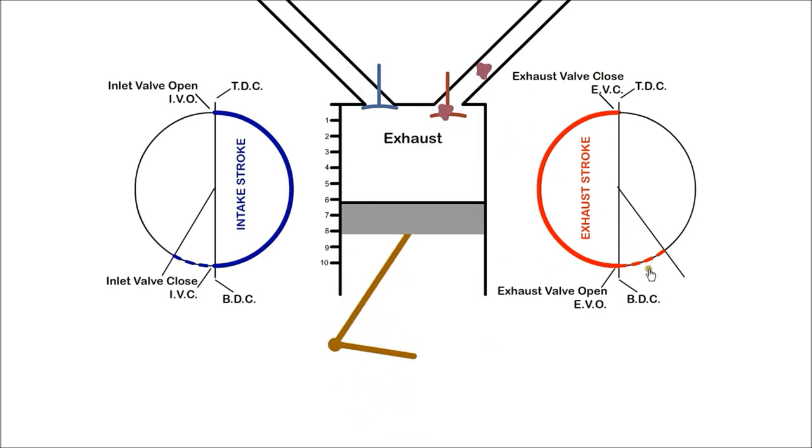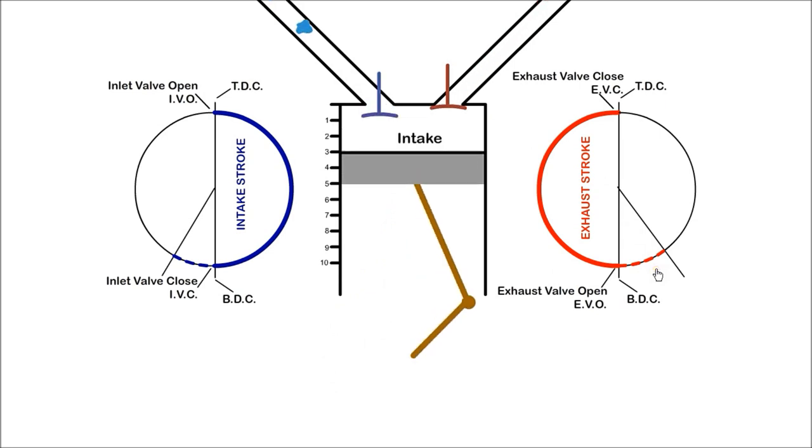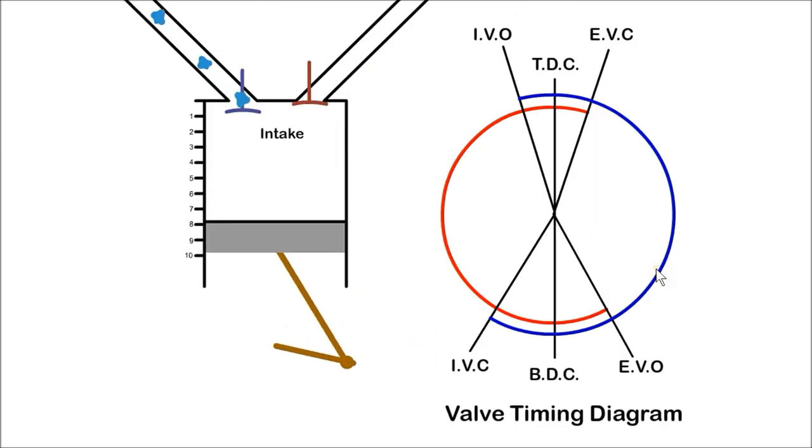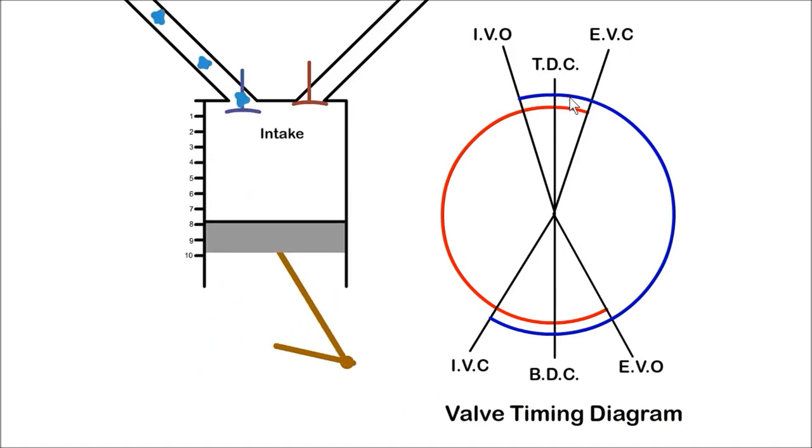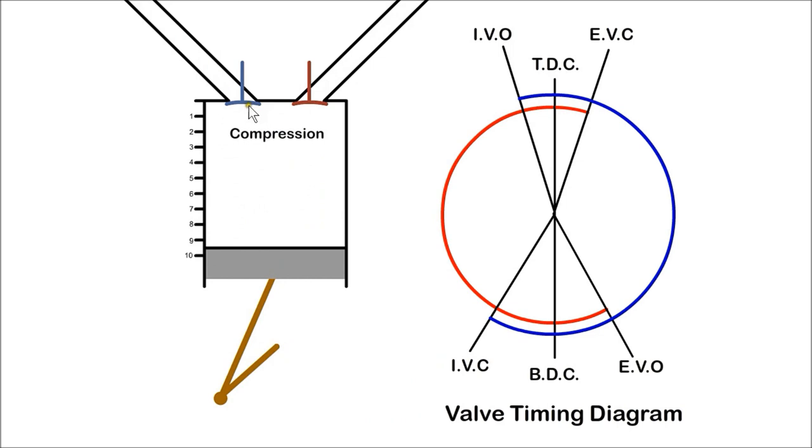We use a timing diagram to show the valves opening and closing. Near top dead centre of the exhaust stroke, both inlet and exhaust valves are open for a short period. The flow of air from inlet to outlet is called valve overlap and aids scavenging of the exhaust gas.